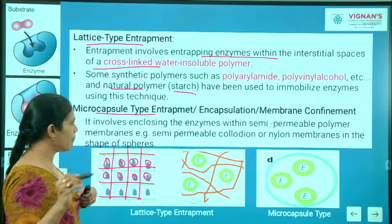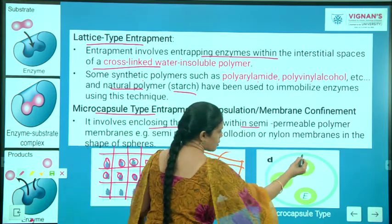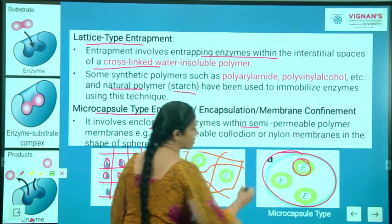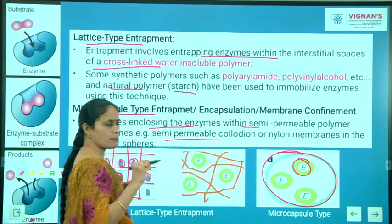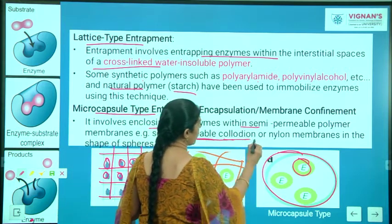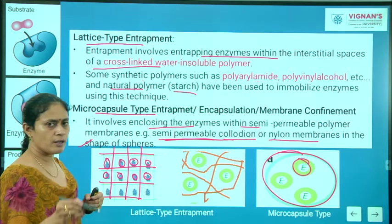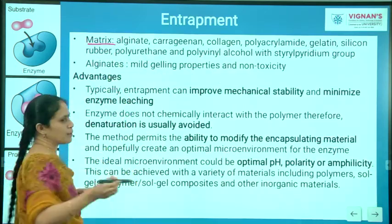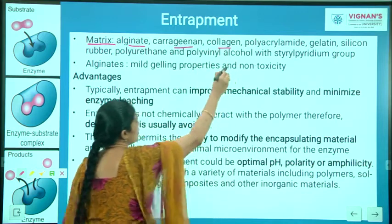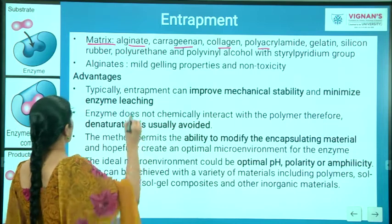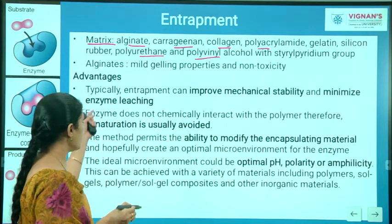In microcapsular entrapment or encapsulation, the enzyme is enclosed within a semi-permeable polymer. Examples include semi-permeable collodion or nylon membranes shaped as spheres. Matrix materials for encapsulation include alginate, carrageenan, colazin, polyacrylamide, gelatin, silicone, rubber, polyurethane, and polyvinyl alcohols.